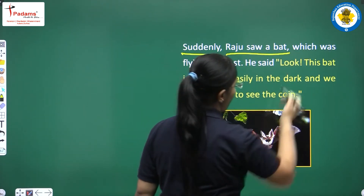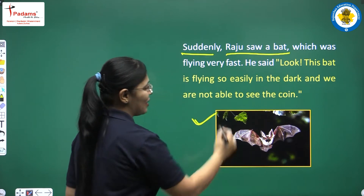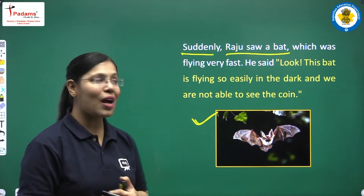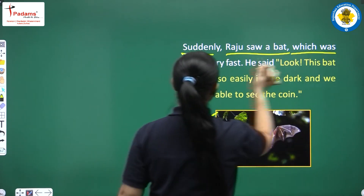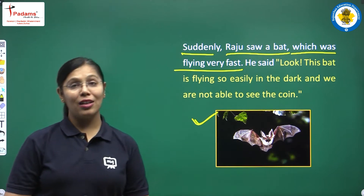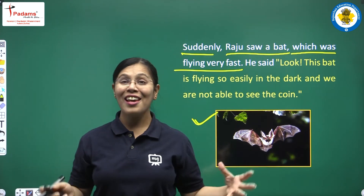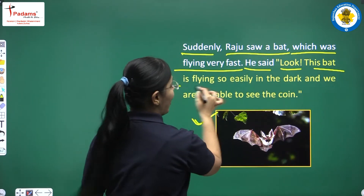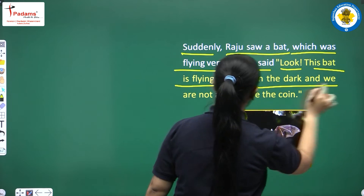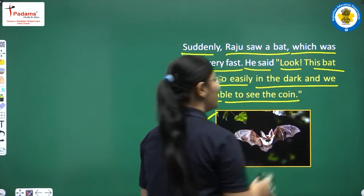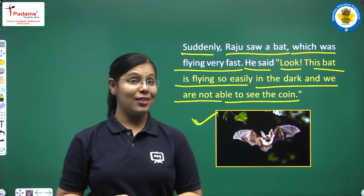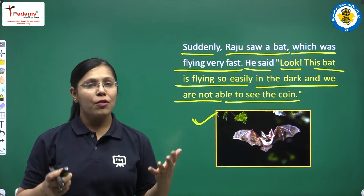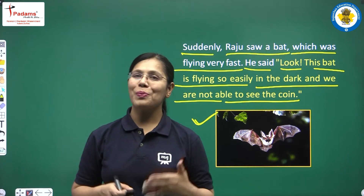Suddenly Raju saw a bat. Here you can see the picture of a bat. Tabhi Raju ne kya dekha? Achanak se usne ek chamgadar dekha, which was flying very fast. Aur wo chamgadar bohat hi teji se ur raha tha. Raju said, look — this bat is flying so easily in the dark and we are not able to find a one-rupee coin!